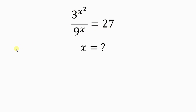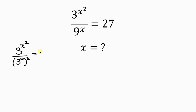So here we have 3 to the x squared, all over 9 — which is the same as 3 squared, and this is raised to the x. This is equal to 27, which is the same as 3 cubed.